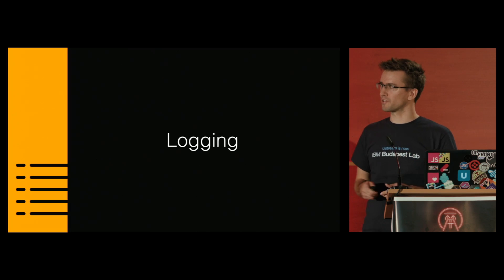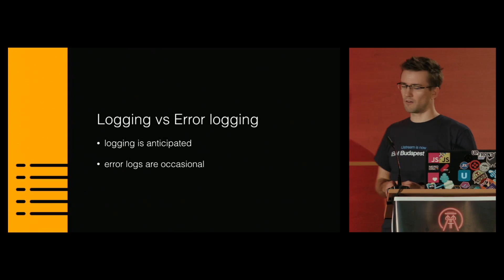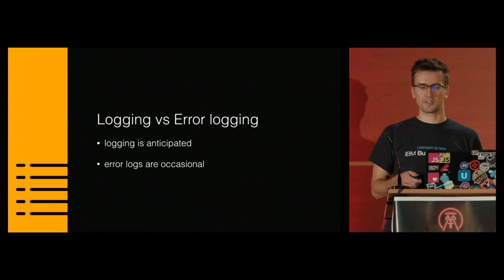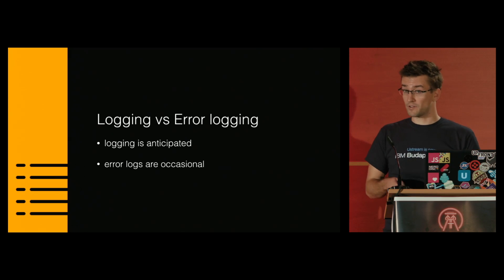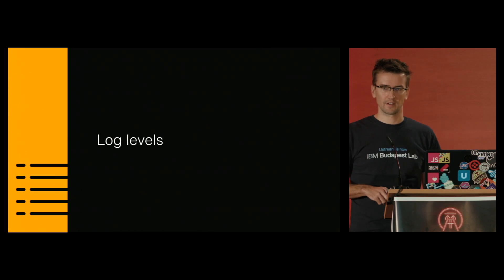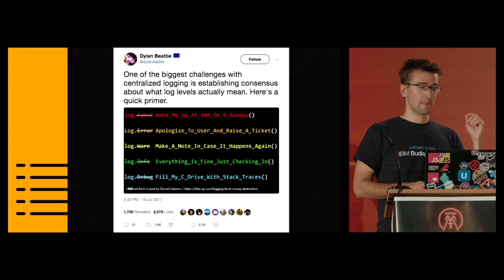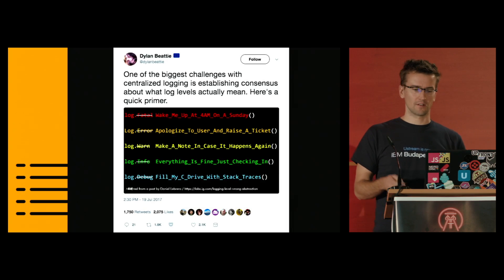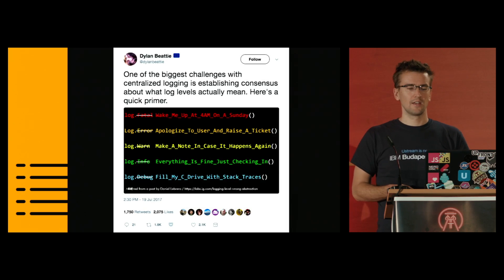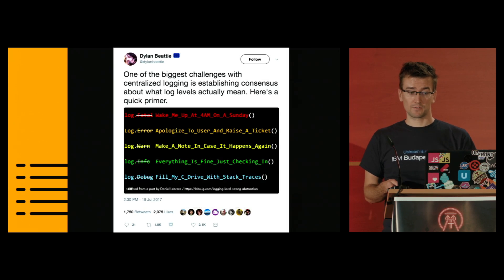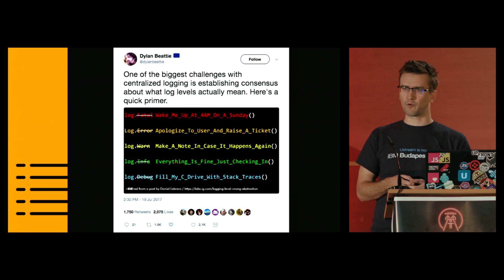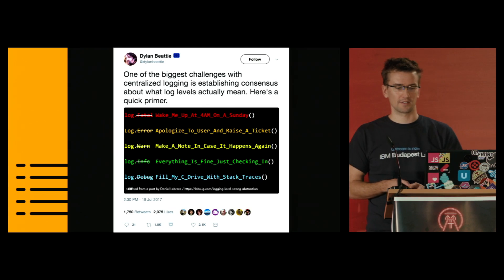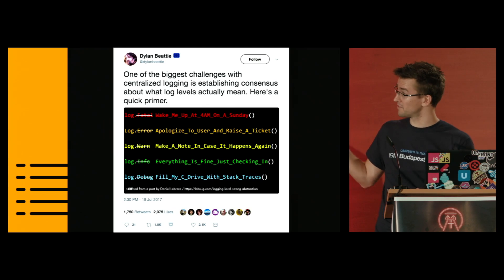Let's move on to logging in a more general way. The difference between error logging and logging is: you expect the logs. Logs are anticipated, but you don't expect the errors — they are occasional, but you can prepare for them. A good way to distinguish logs and their context is using log levels, but simple log level names like Fatal, Error, etc. are relatively meaningless. Some great people on the internet suggested we should rename them — like Fatal is "wake me up at 4 a.m. on a Sunday," or Warn is "apologize and raise a ticket." I love this — it shows exactly what each error log level should mean.